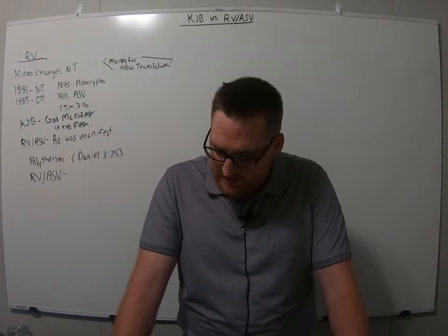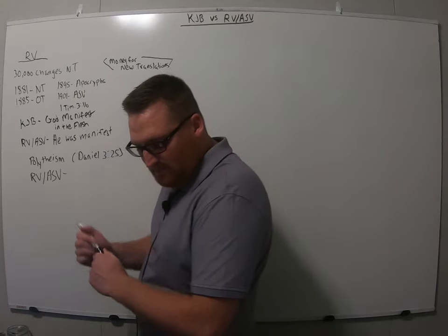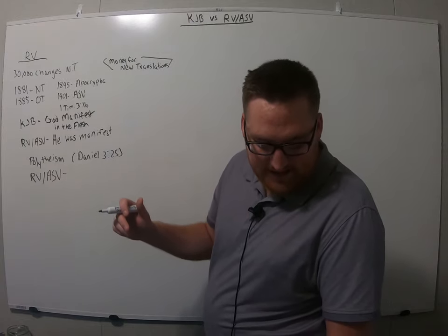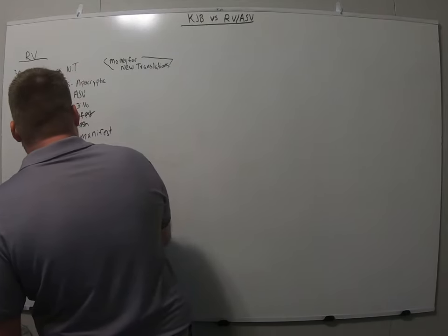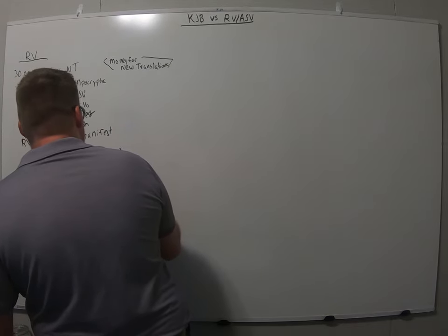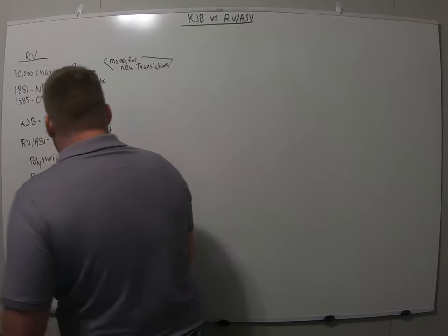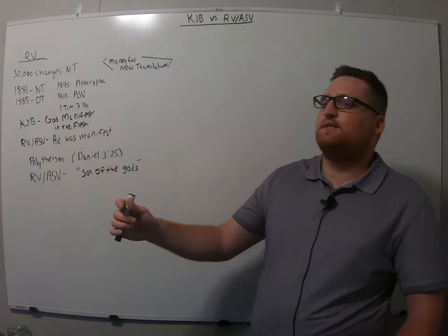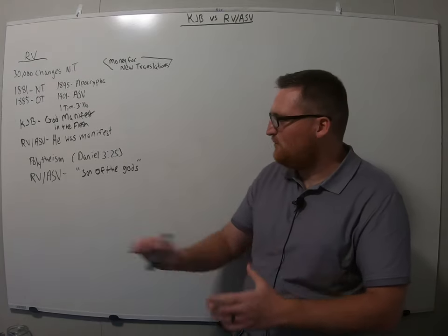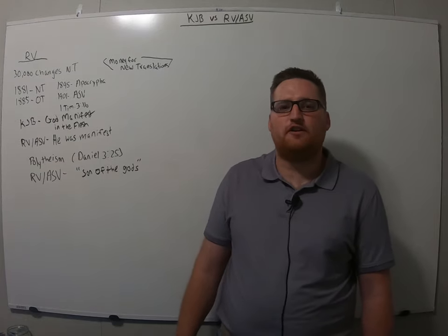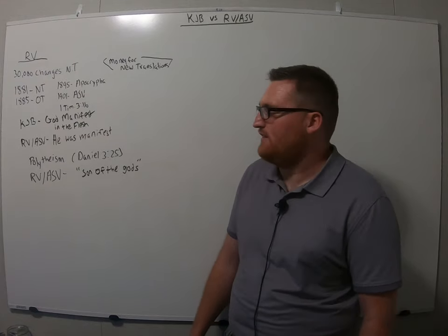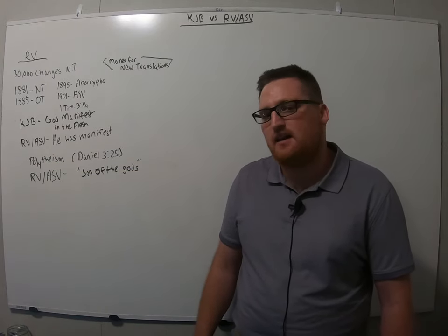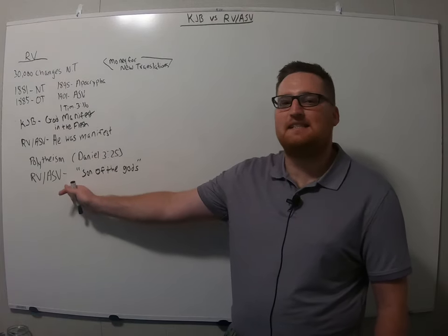But this is what the RV and the ASV changes to. They change in verse 25 from the fourth is like the Son of God to the fourth is Son of the gods. So according to this, the Son of the gods, Jesus was created by the gods and they had intercourse with each other which is just not true. If Jesus is born of a virgin by the Holy Spirit of Mary, there was no intercourse at all for this. They are teaching polytheism by mentioning Son of the gods. This is not right. Jesus is the Son of God the Father.